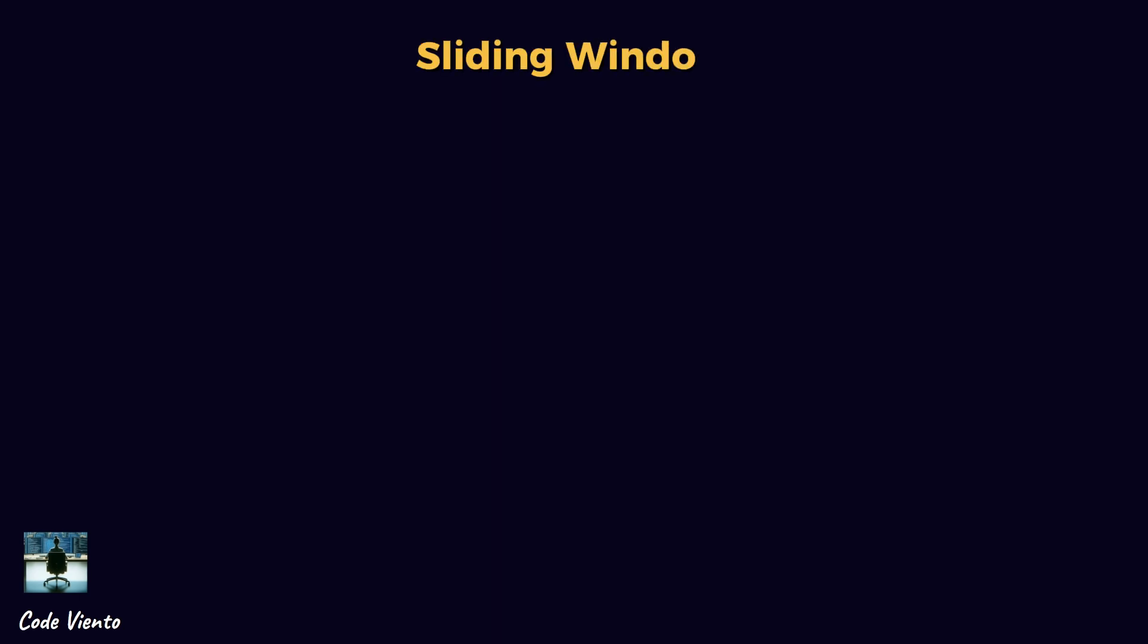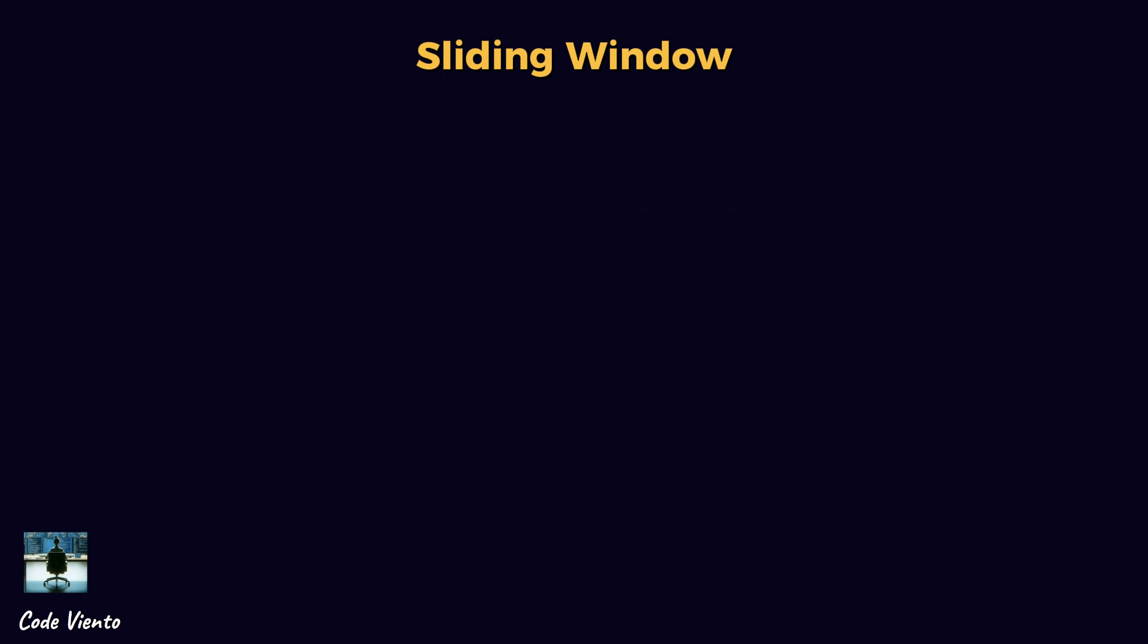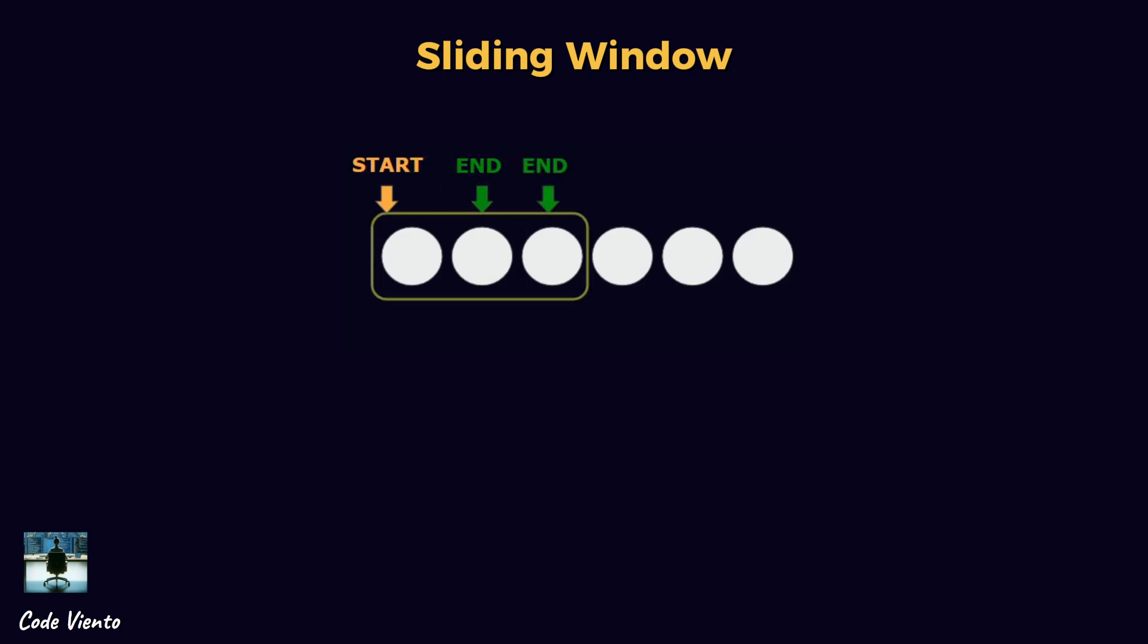Sliding window is an extension of the two-pointer technique that focuses on maintaining a subarray or substring of elements that meets a certain condition. You define a window using two pointers, the start and the end of the window. As you traverse the array, you dynamically adjust the window. Expand it to include more elements until a condition is violated, then contract it to remove elements until the condition is met again.